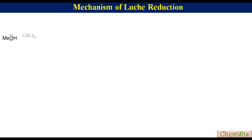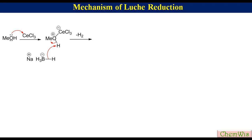Let's go through the mechanism to understand the regioselectivity more clearly. Methanol, which is a solvent in the reaction mixture, acts as a Lewis base. Cerium chloride is a Lewis acid, so methanol attacks on cerium chloride to produce a methanol-cerium chloride adduct. The acidic nature of the methanolic proton in this adduct is much higher than the free methanol due to the presence of positive charge on the oxygen atom.